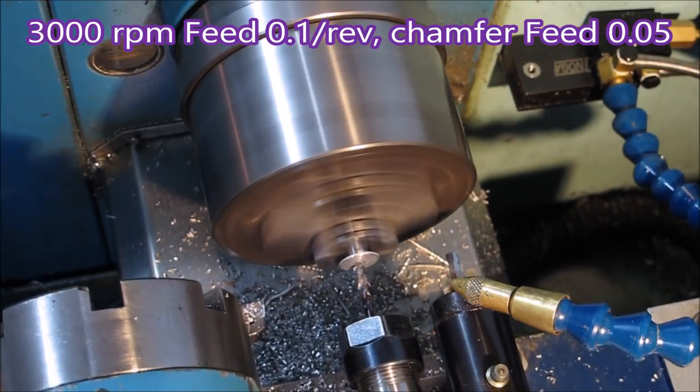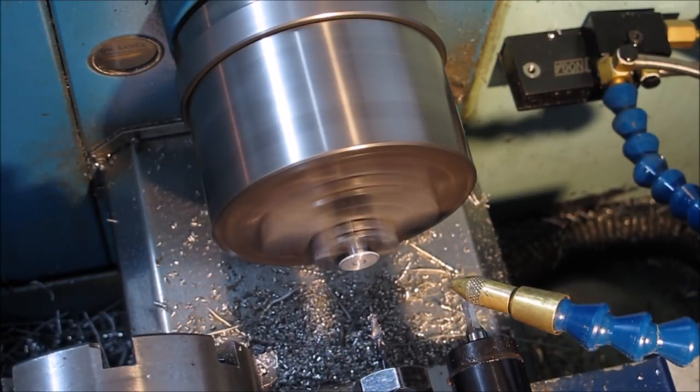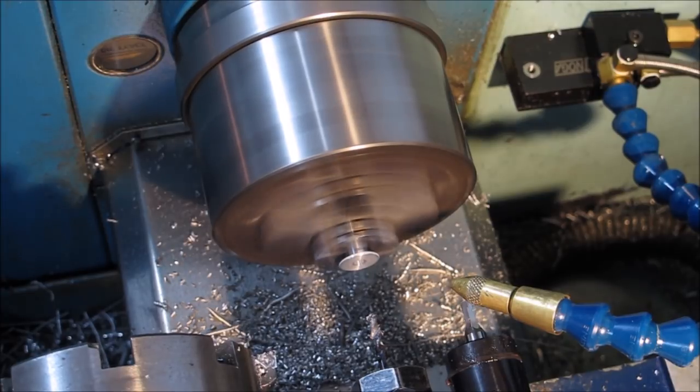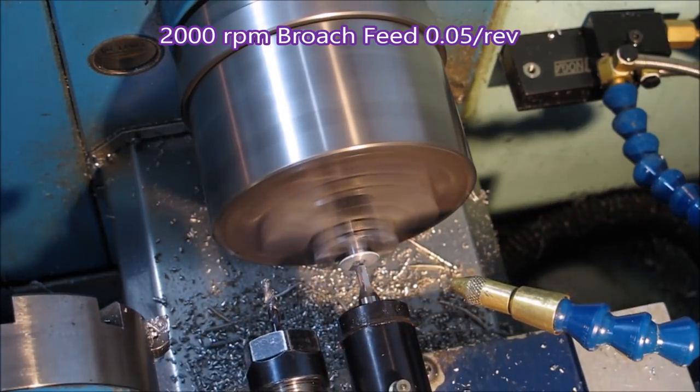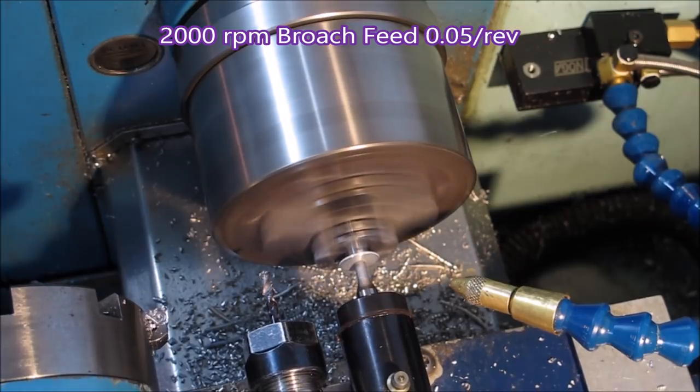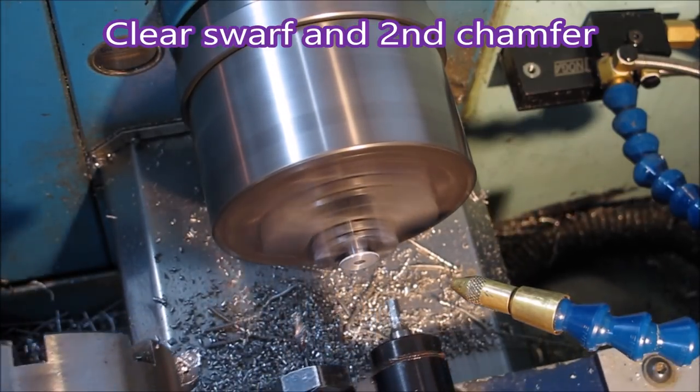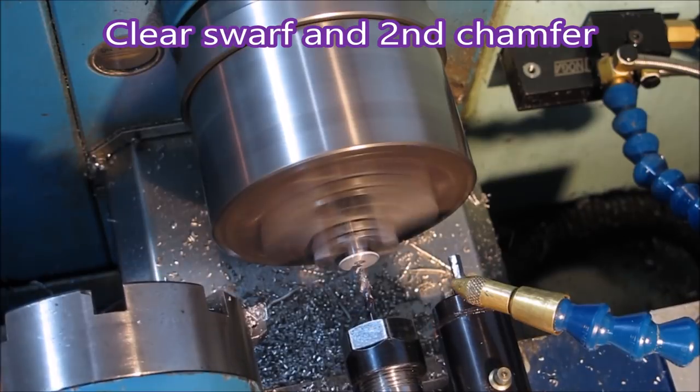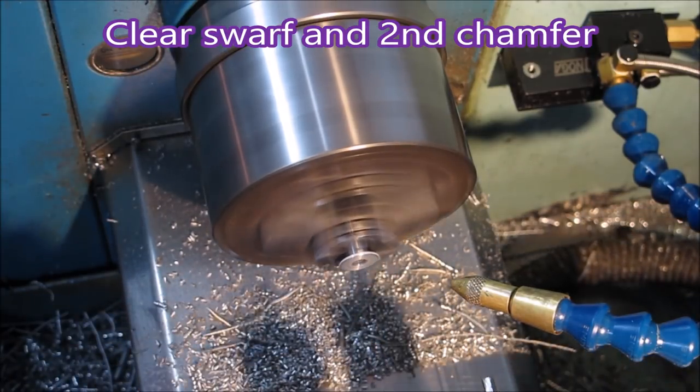I tend to reduce the rapid to a very slow rapid for the first run of something like this, so I've got time to see if anything's going to go bang. There's the broach going in again. Drill comes back, gets rid of the swarf, puts the chamfer on.